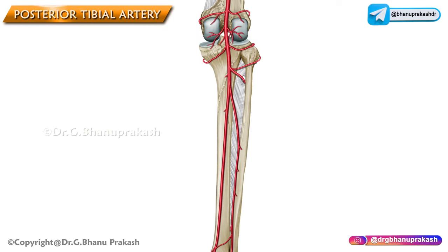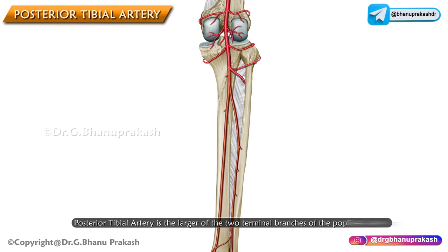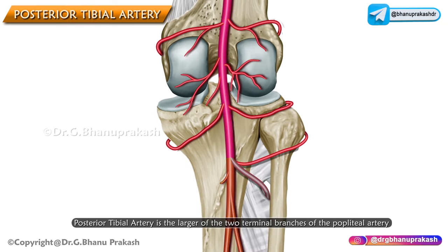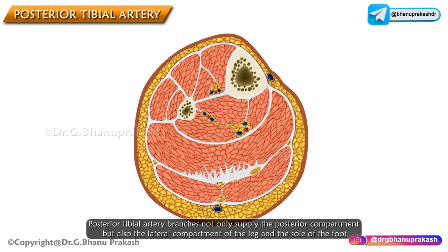Posterior tibial artery. The posterior tibial artery is the larger of the two terminal branches of the popliteal artery because its branches not only supply the posterior compartment but also the lateral compartment of the leg as well as the sole of the foot.